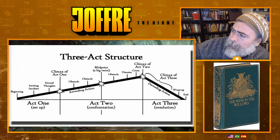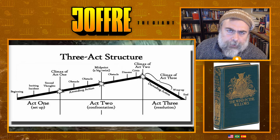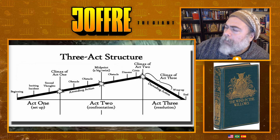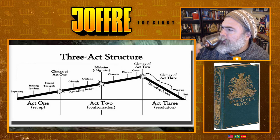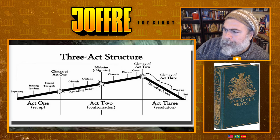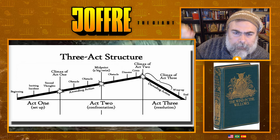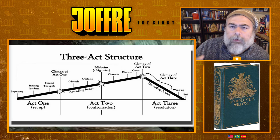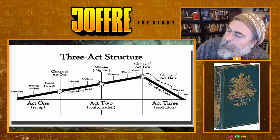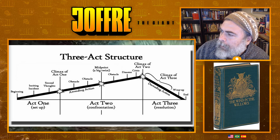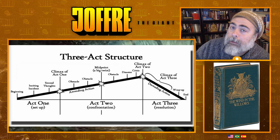Here we have a typical plot structure as modern and contemporary teachers like to explain it to us: a three-act structure. There is an inciting incident, rising action, a climax, and then descending action, falling action, the resolution of the story. So the climax is the key — a Western, orgasmic approach to writing. The rise to the climax and then the close. That is the typical structure.